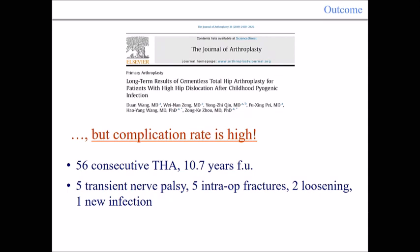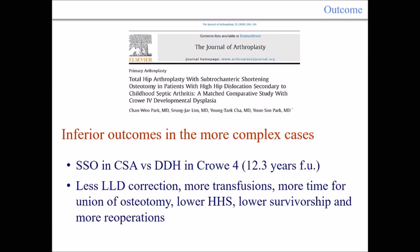In a series of 56 consecutive total hip arthroplasties at 10-year follow-up, there were five transient nerve palsies, five intraoperative fractures, two loosenings, and one new infection. So even if the reinfection rate is low, the complication rate is high. You can have inferior results when comparing childhood septic arthritis versus DDH in cases of, for example, shortening subtrochanteric osteotomy.